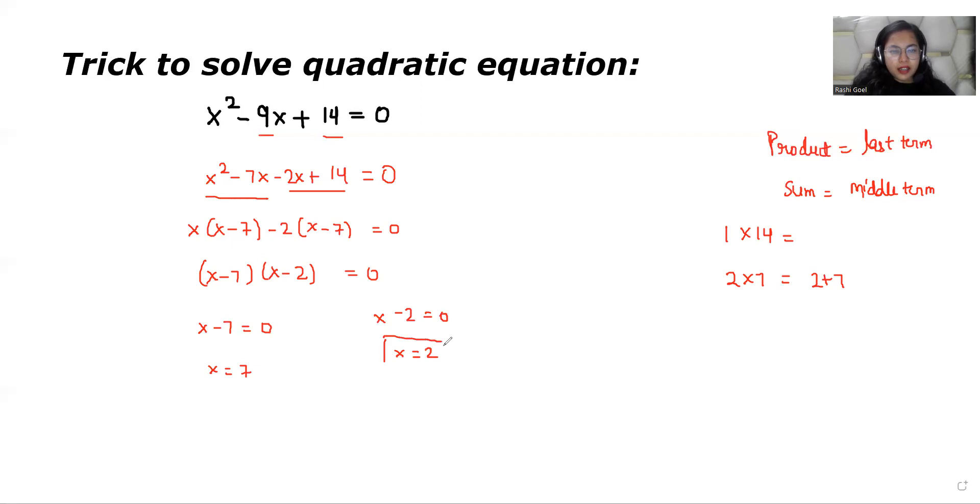I hope it's clear. So I am giving you an equation in homework. You have to solve it and comment down your answer. So your question is x squared minus 3x minus 10 is equals to 0.